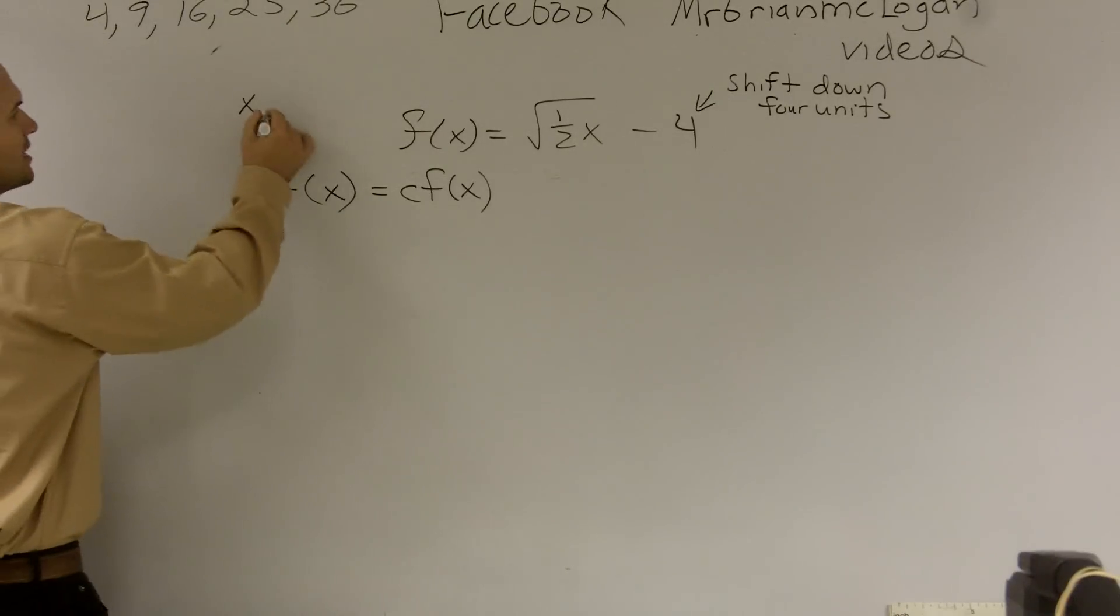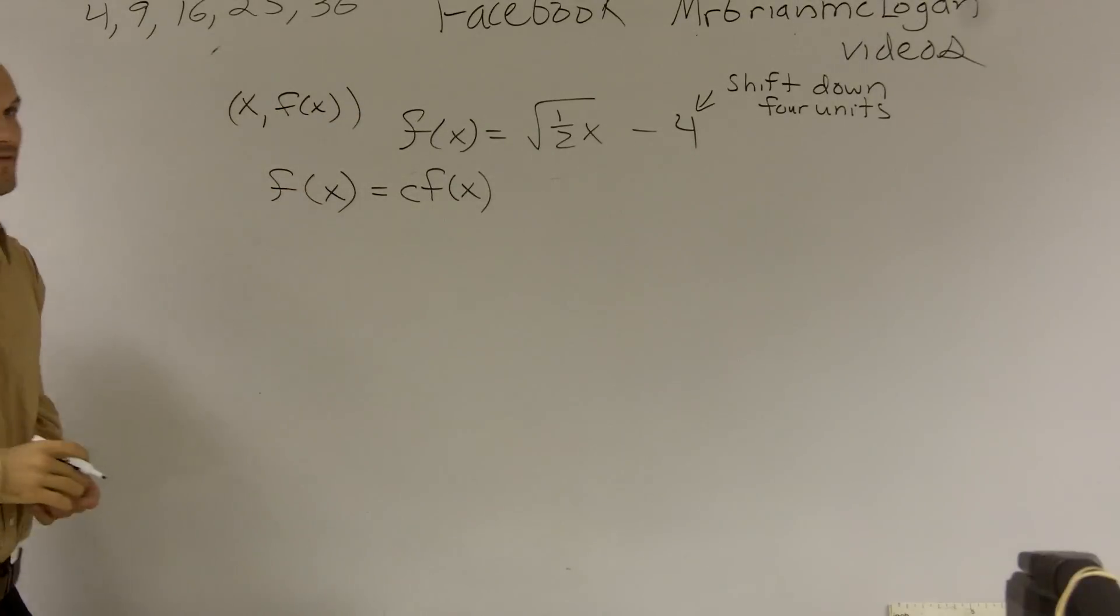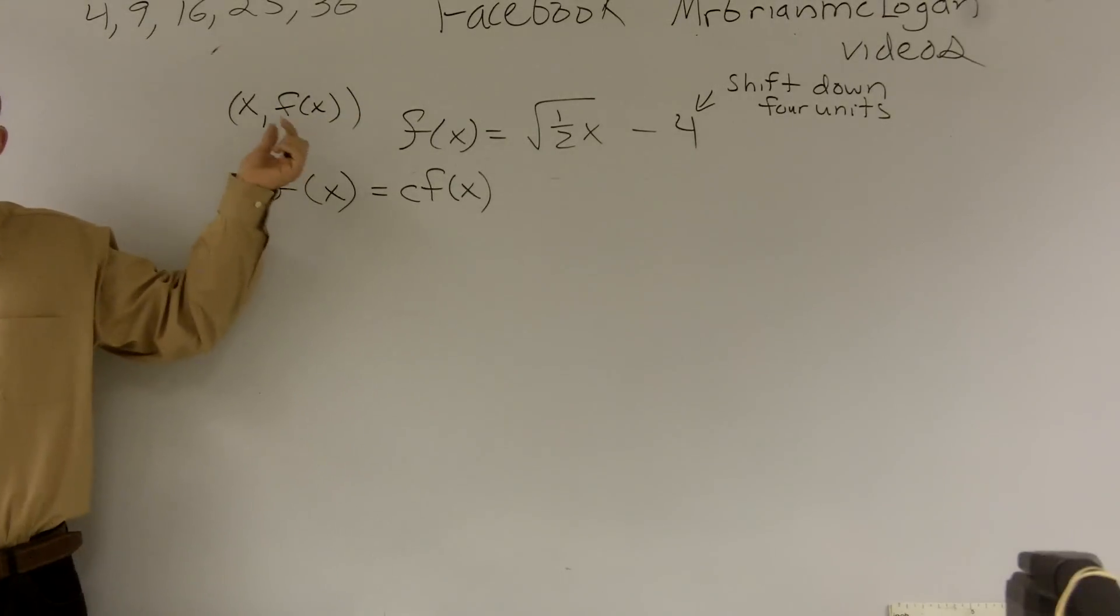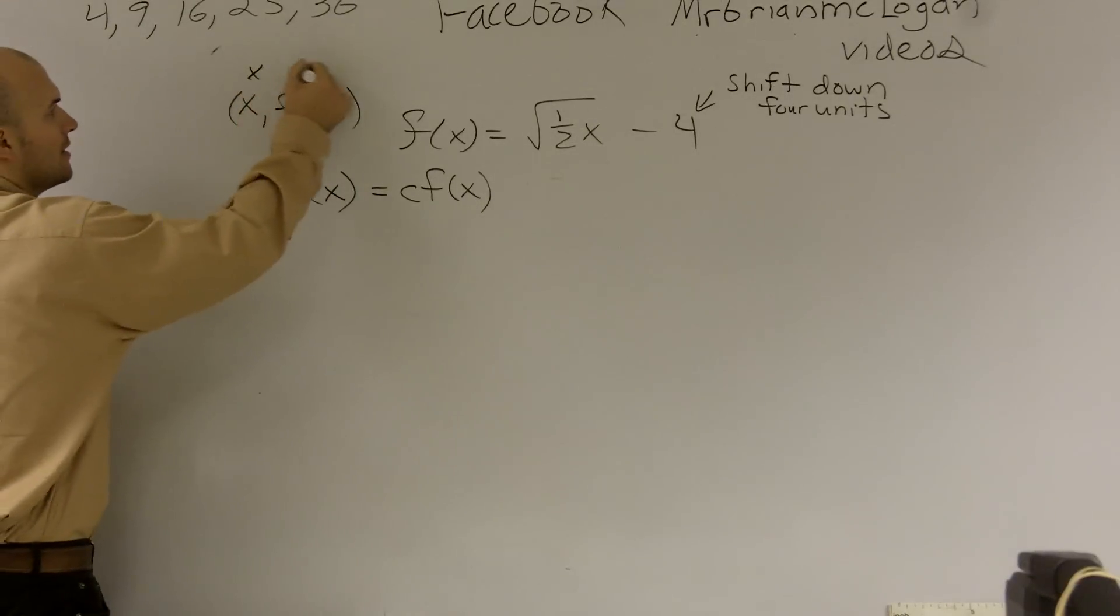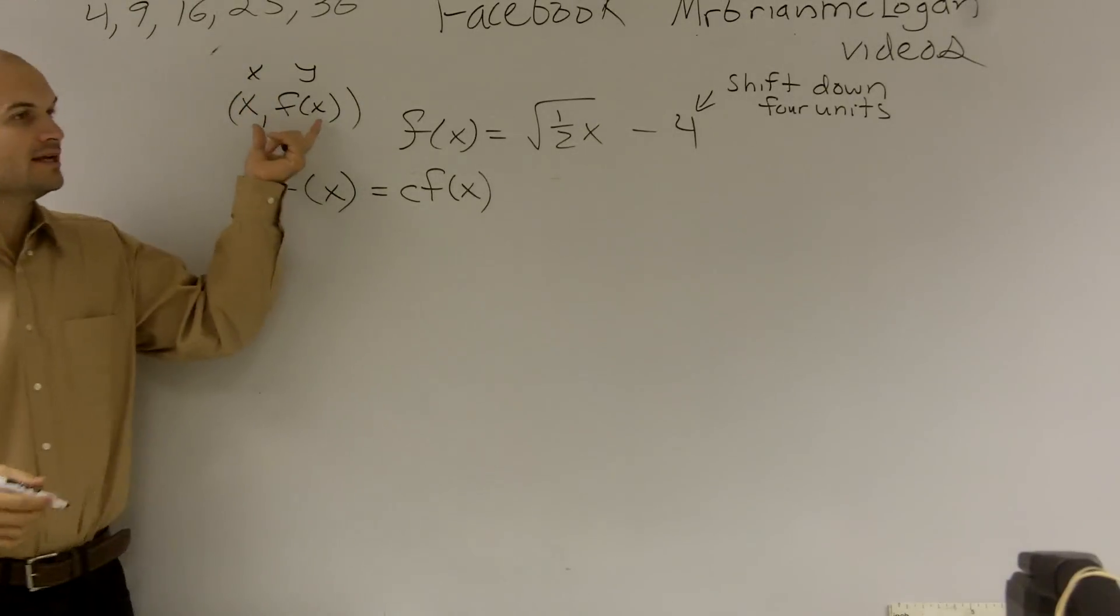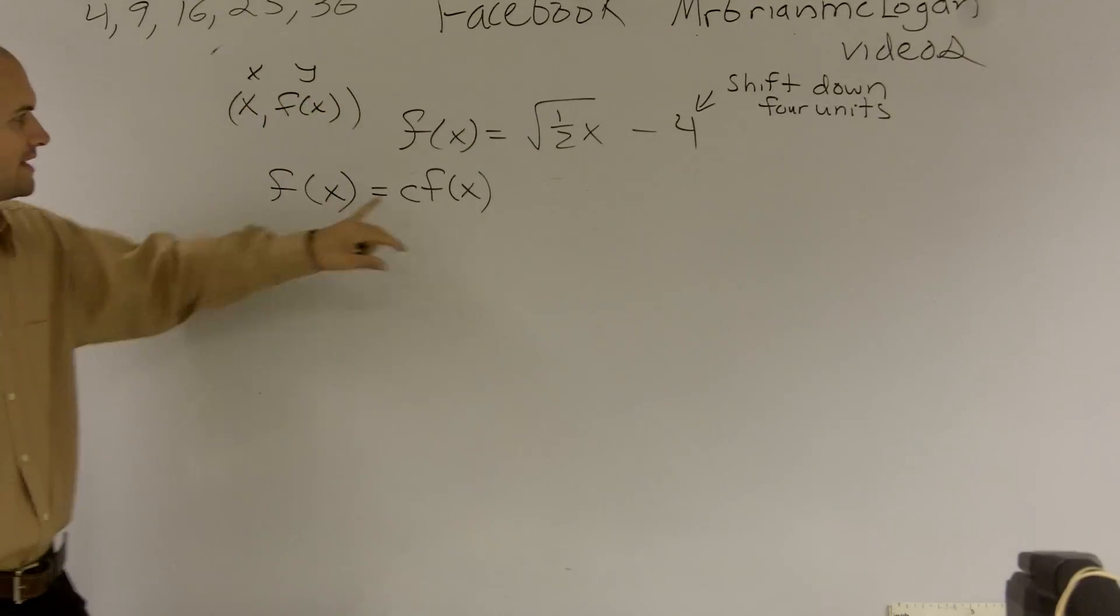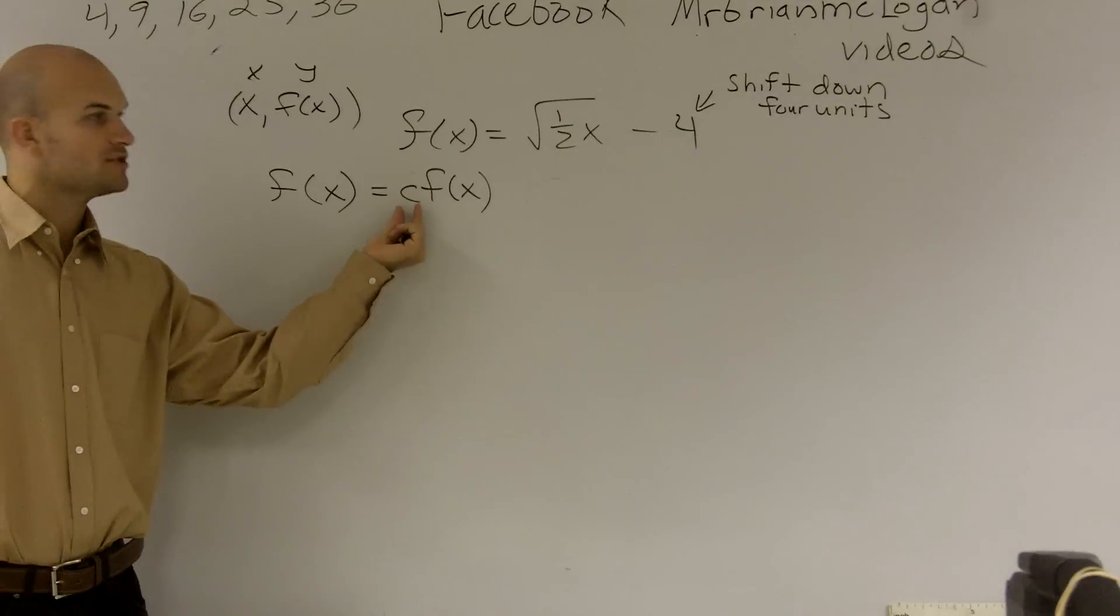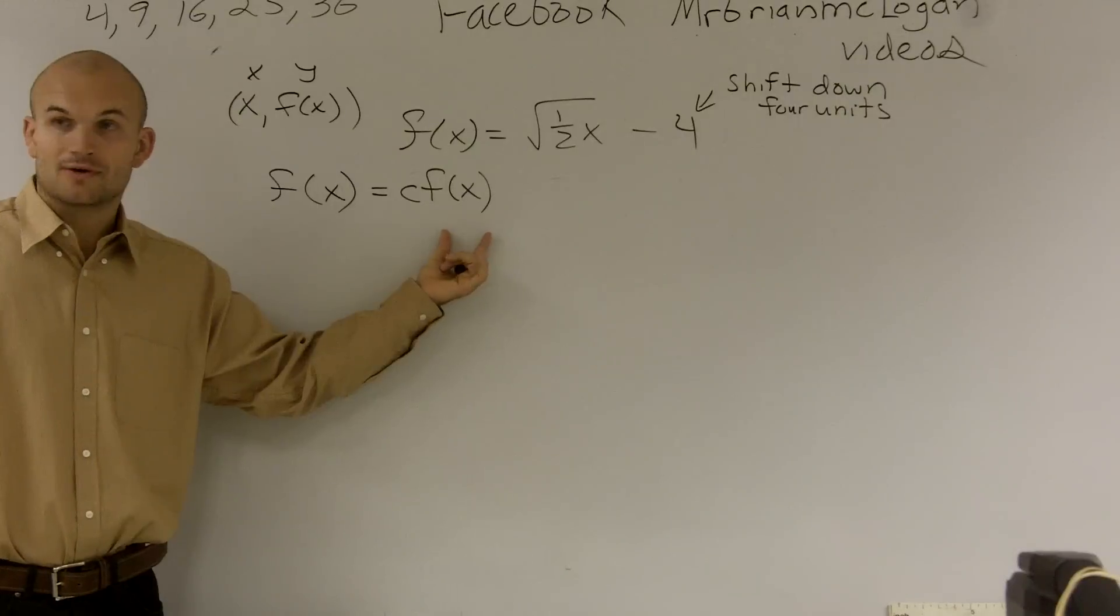If we have f(x) equals c times f(x), what this is going to do is this is going to give us a vertical either shrink or stretch. It's actually going to change the points. Now, if you guys remember when we're talking about functions, we have a function that has two coordinates. It has an x and it has an f(x), very similar to our x and y. But we're going to be using our f(x) as our output value. So when you're looking at this, if you're saying, all right, now I'm going to multiply a constant times my output value, what's going to change that output value?